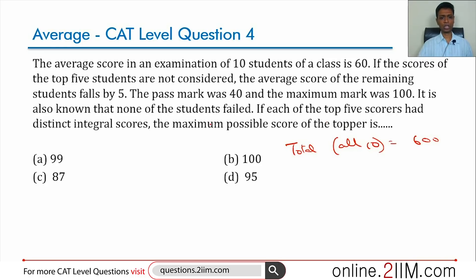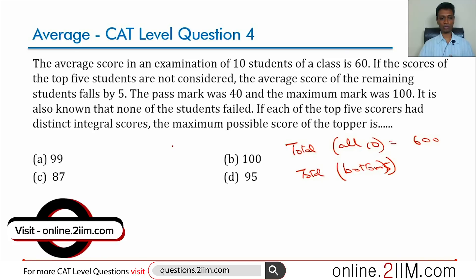The top five are not considered, the average score of the remaining students falls by 5. So the bottom five - if the top five are not considered, average falls by 5. So the average in the bottom five would be 55, the total would be 55 into 5, this is 275.